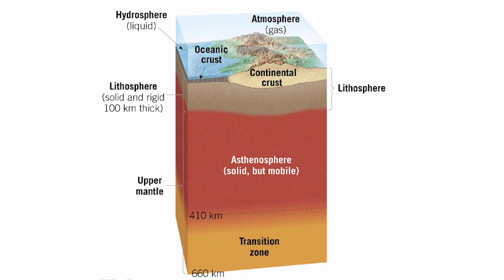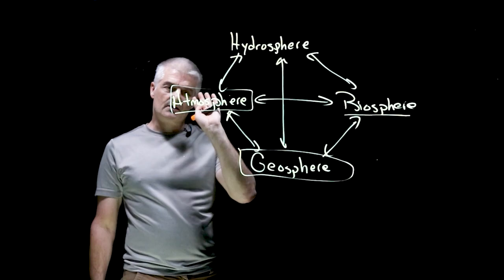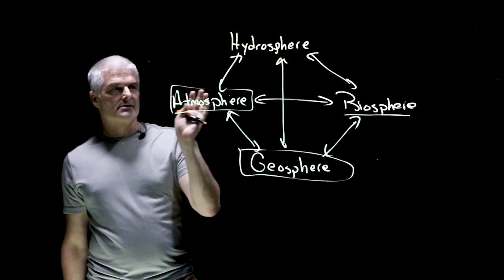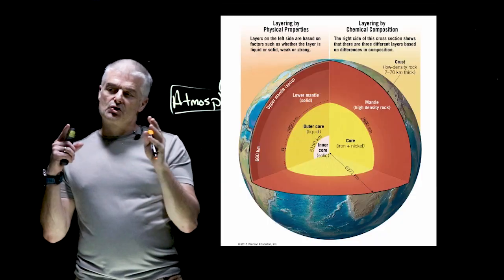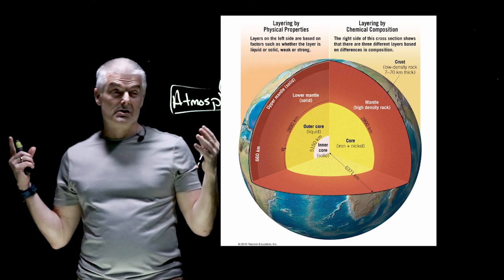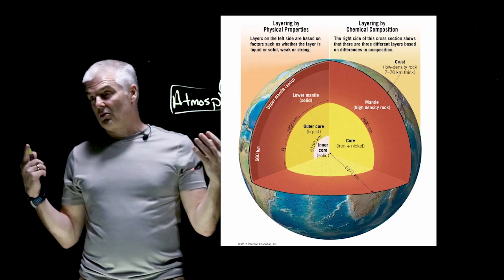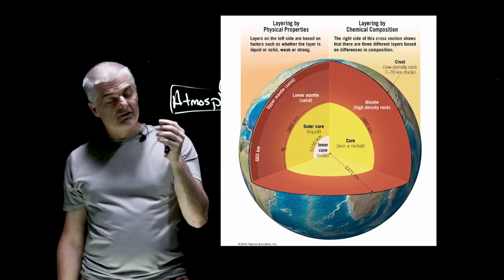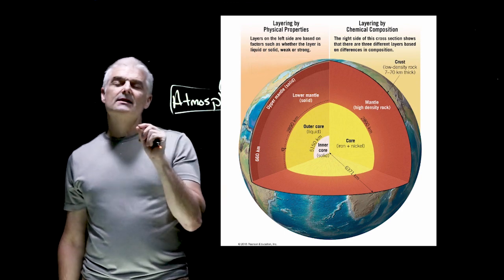You can see the layers, and obviously there's the atmosphere right there. How we know all this stuff will come up when we talk about earthquakes and awesome stuff like that. The next image is a cross-section of the Earth. You can see the inner core, the outer core, the mantle, and then the crust. The crust or lithosphere is such a skinny part.